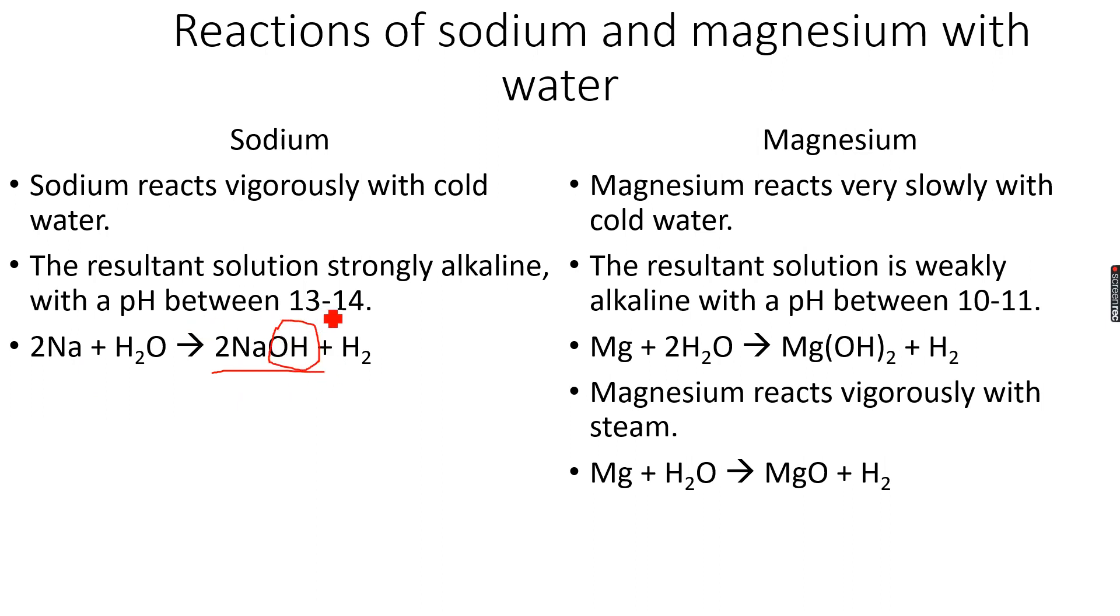The pH is between 13 to 14. Magnesium reacts very slowly with cold water. The resultant solution is weakly alkaline with a pH between 10 to 11. Magnesium hydroxide is actually very weakly alkaline because it is weakly soluble in water. Because it does not dissociate completely, magnesium has a lower pH compared to the hydroxide of sodium.